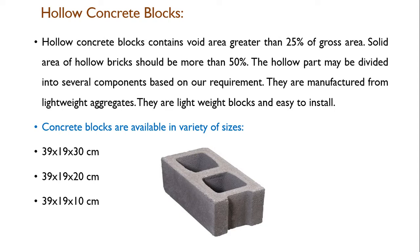In case of hollow concrete blocks, hollows are provided. Hollow concrete blocks contain a void area greater than 25% of the gross area, and the solid area of hollow concrete blocks should be more than 50%. The hollow part may be divided into several components — there may be 2 or 3 hollows depending upon the requirement.